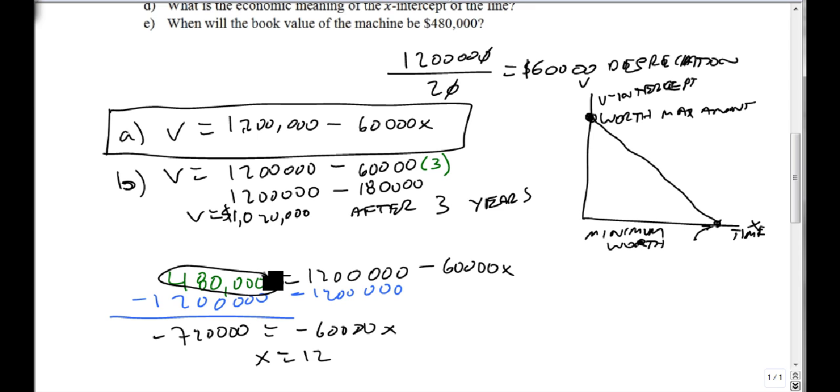This is our straight-line depreciation. It builds off the idea of putting in your inputs, getting your outputs, comparing them, and building this per year model. The total dollars divided by the total years gives you how much we lose per year. That's our slope.